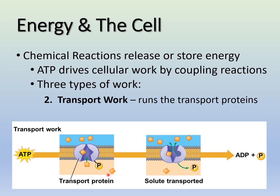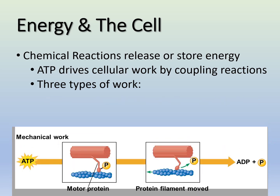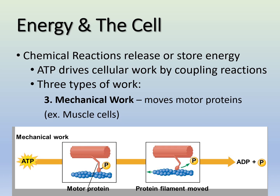The second type of work is transport work — powering active transport proteins. ATP binds to the transport protein, undergoes hydrolysis, and the released energy is transferred into the protein, which then pushes a molecule across the membrane against its concentration gradient. Again, you end up with ADP plus phosphate as products.